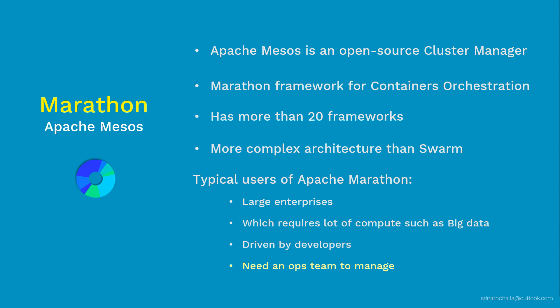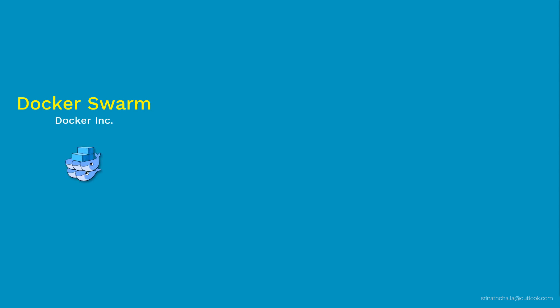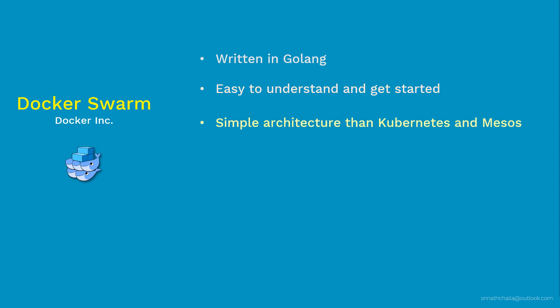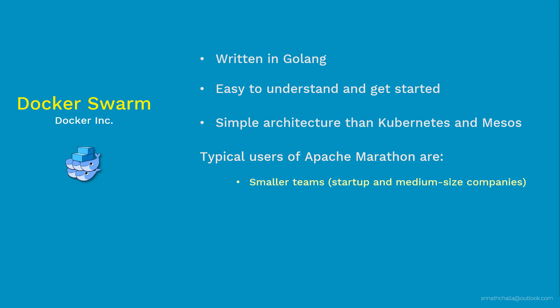The next container orchestration engine is from the Docker family — Docker Swarm. Docker Swarm is a great product from Docker Inc, focused on container orchestration. It is written in the same programming language as the Docker container engine, which is Go — a lightweight declarative language. Docker Swarm is easy to get started with, set up, and understand. It has the simplest architecture compared to other container orchestration engines. If you are new to container orchestration, it is a good idea to start with Docker Swarm. Typical users are smaller to medium-sized teams like startups.